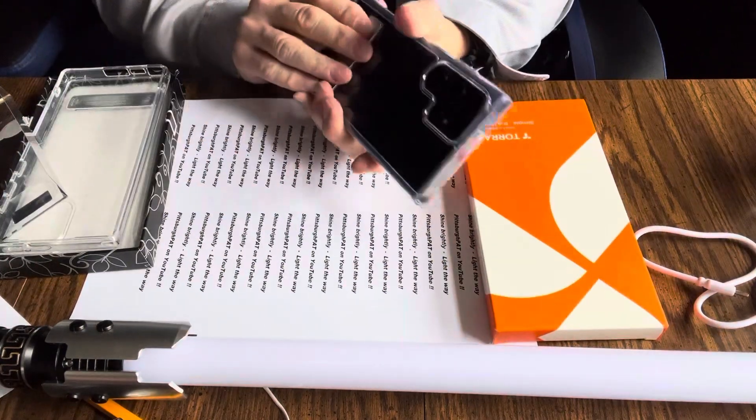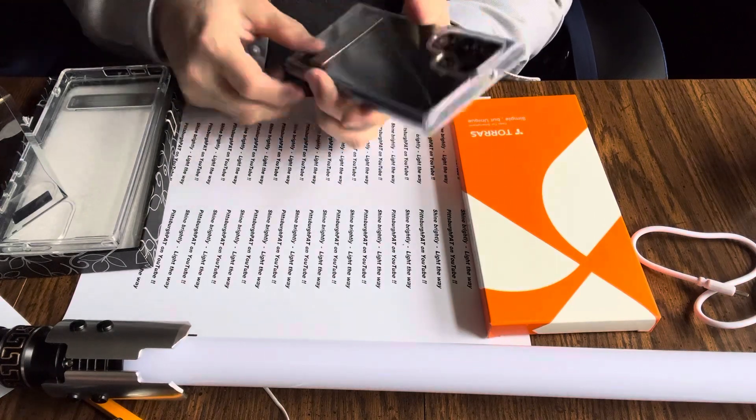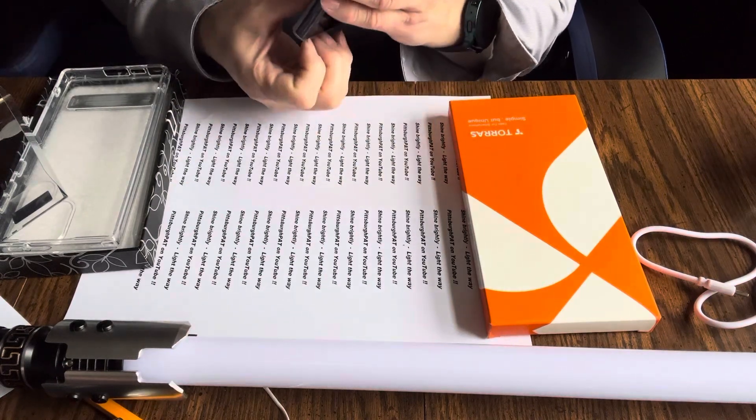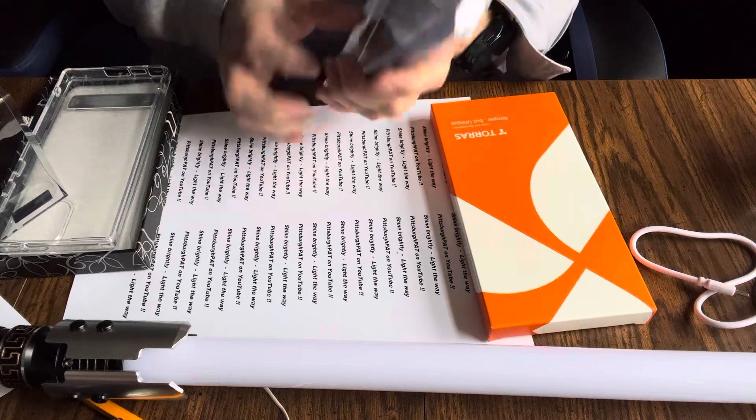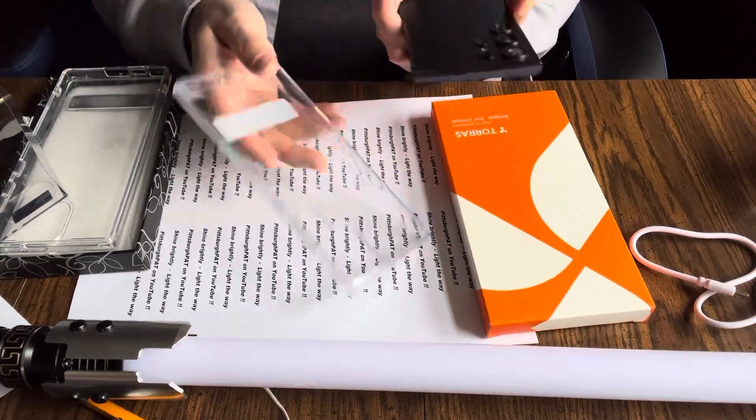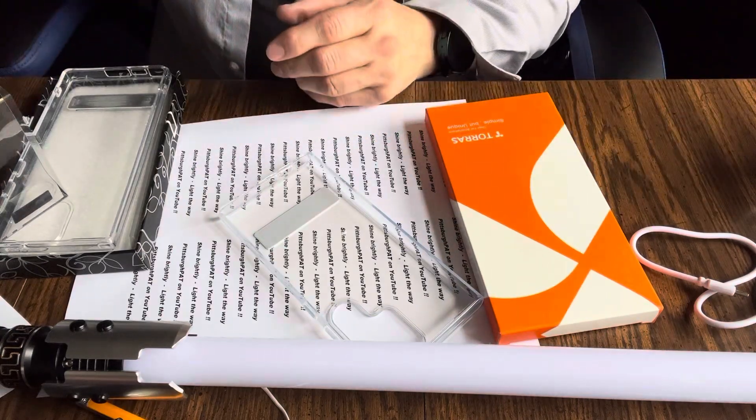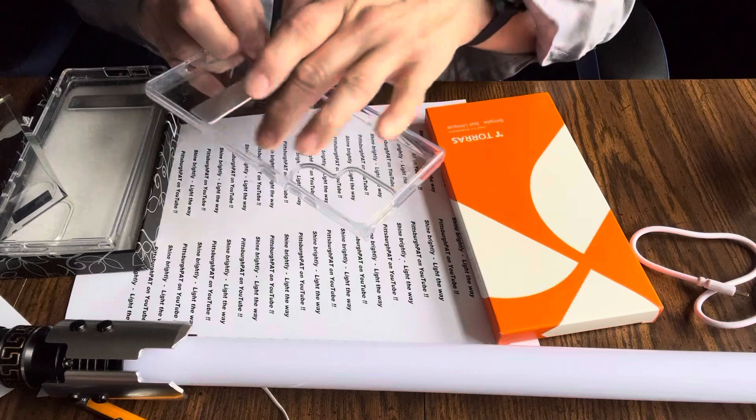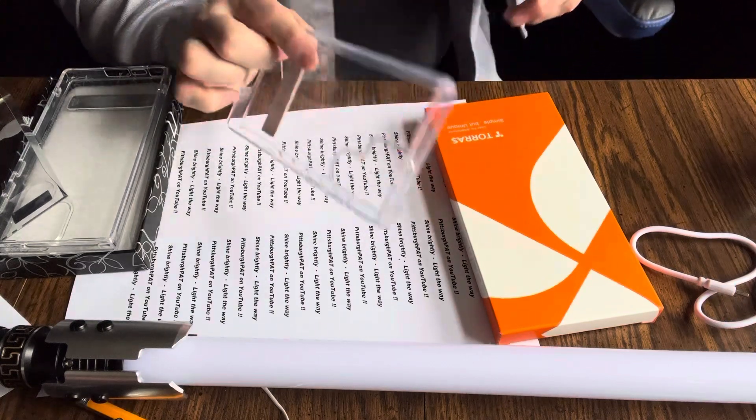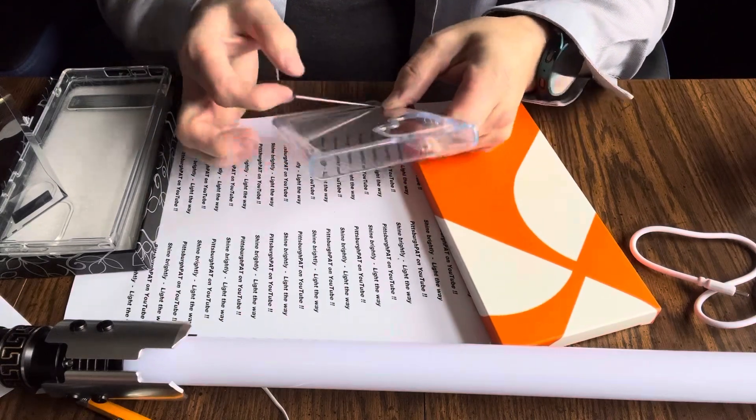And what I wanted was a clear case because I want to put my QR code and my contact information there. So that when I'm at a convention or something like that, I can just say I'm Pittsburgh Pat on YouTube, just scan this. And I'll put my QR code in here just like I have for the phone I'm using to record this with.